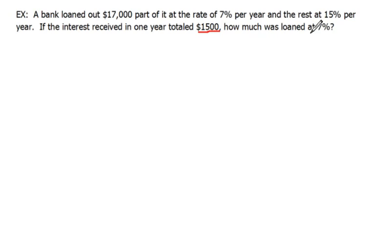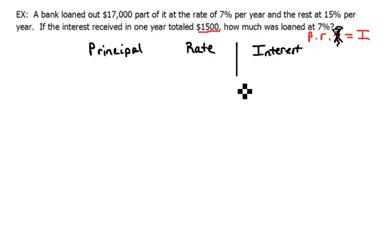We know that principal times rate times time equals interest, and in this case we're going to be using time as just one, so we're just going to ignore it. So principal times rate in this case equals interest. This is going to help us set up our table. So I'm going to have my column headings as principal, and then rate, and then interest.